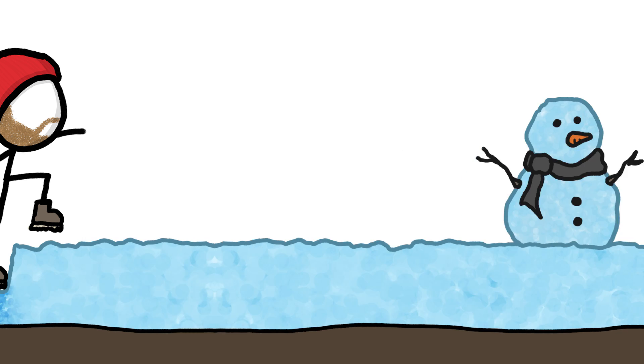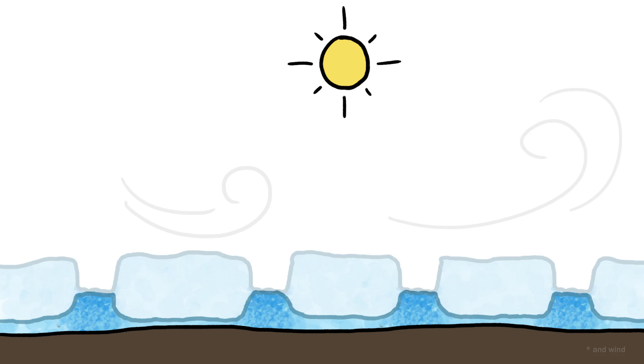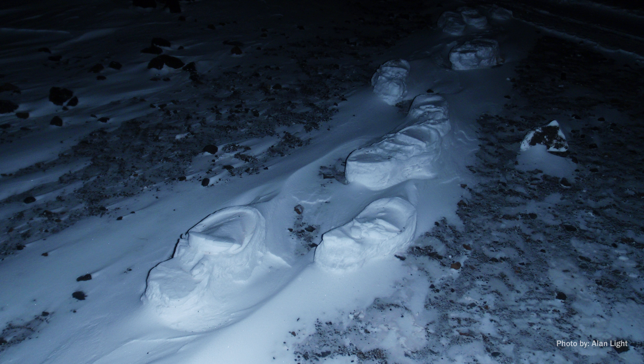If you live in a cold climate, you may have actually seen something like this happen with compacted footprints in the snow. As the sun melts the fluffier snow around them, they can end up sticking out, like this. The same thing can happen to a river valley.